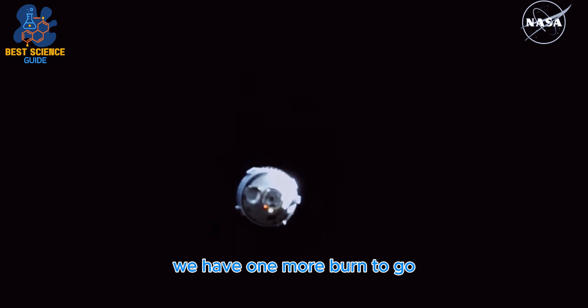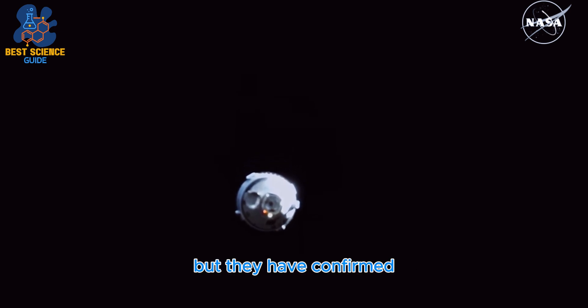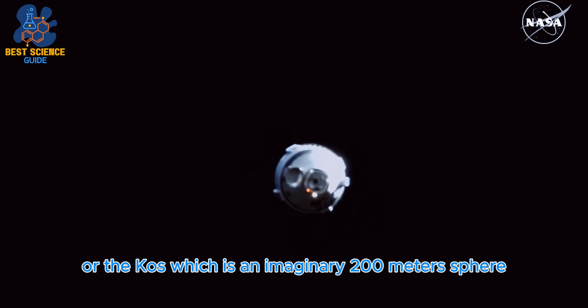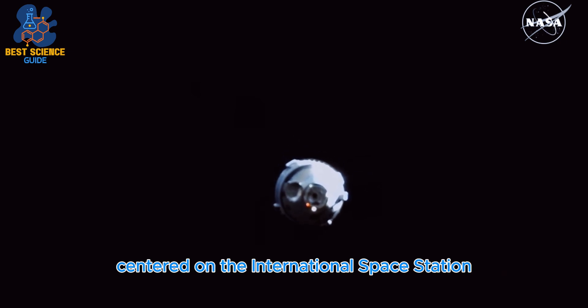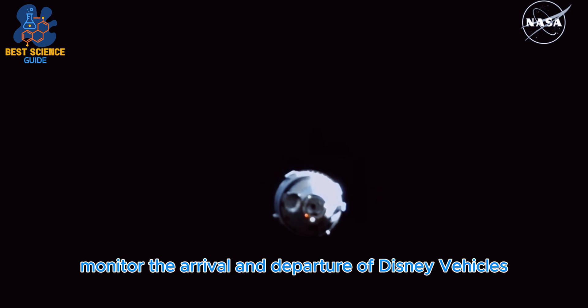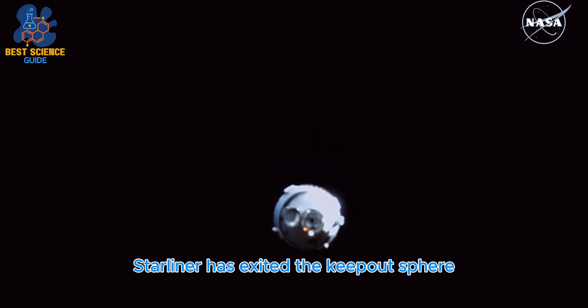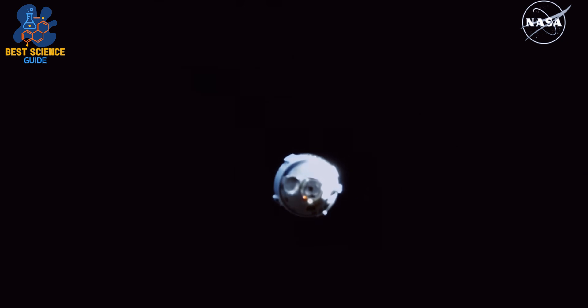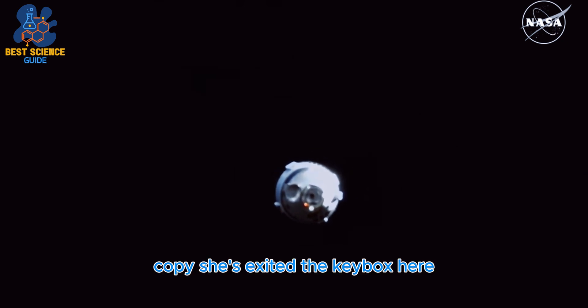We have one more burn to go. They have confirmed that Starliner has crossed the keep-out sphere or the KOS, which is an imaginary 200 meter sphere centered on the International Space Station that helps flight controllers here on the ground monitor the arrival and departure of visiting vehicles. Starliner has exited the keep-out sphere.